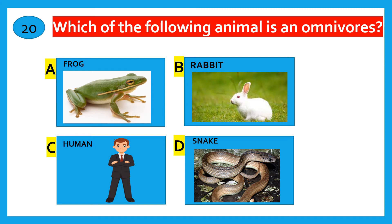Which of the following animal is an omnivore? Frog, rabbit, human, snake? The correct answer is human.